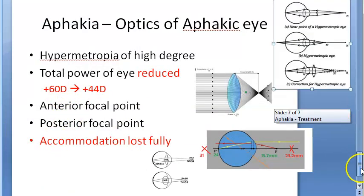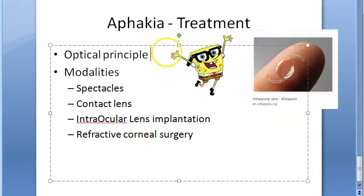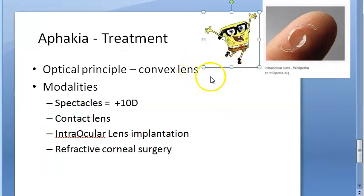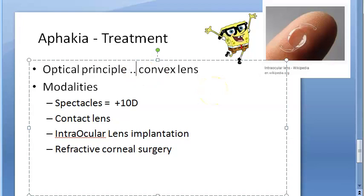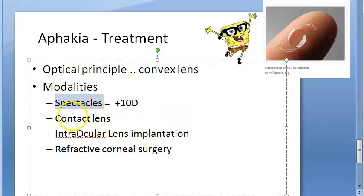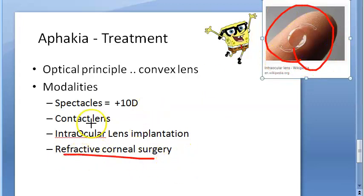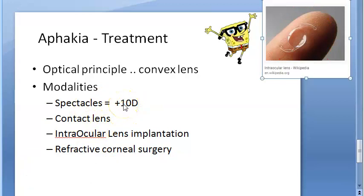A convex lens has positive power, written as positive. This convex lens can be given as spectacles, as a contact lens, or you can implant an intraocular lens into the eye, or they can do something to the cornea. Let us first look at spectacles, which is the most commonly employed method especially in developing countries.